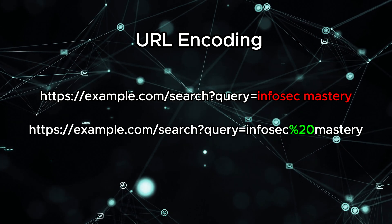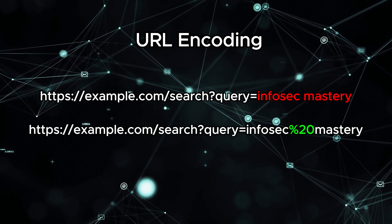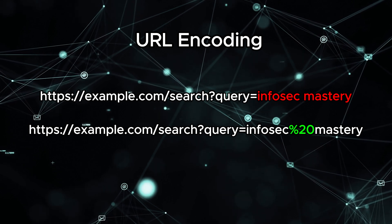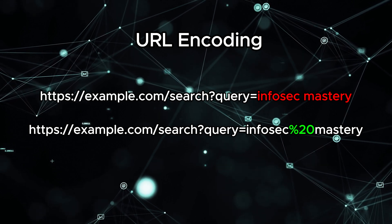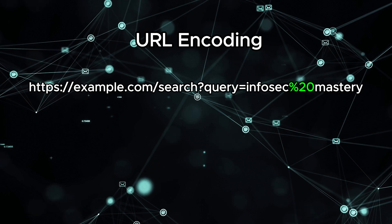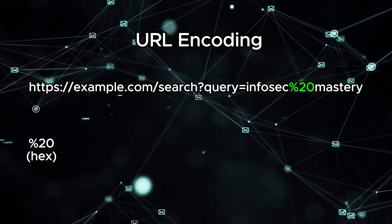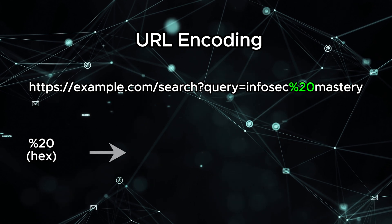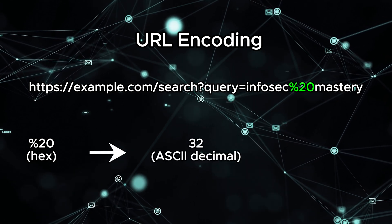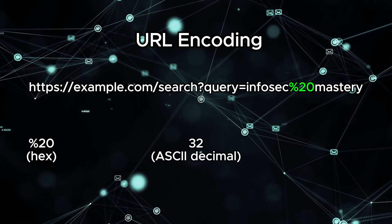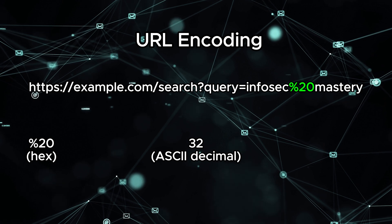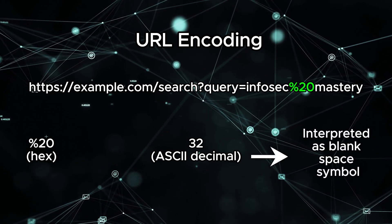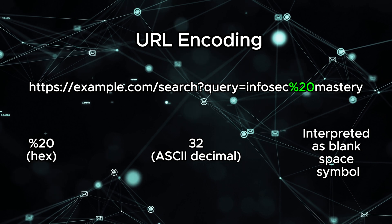After encoding, our URL transforms into this. Now why %20? It might look like a secret code, but it's not that mysterious. %20 is the ASCII hex representation of a space symbol. In the digital world, everything including spaces needs a specific code to be properly understood. So when the browser sees a %20 symbol, it knows to interpret it as a space.